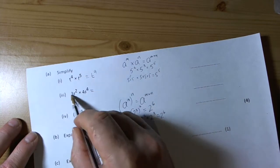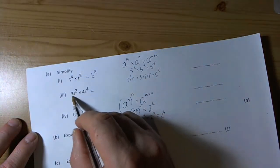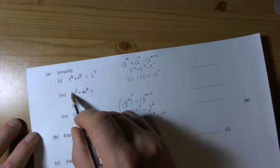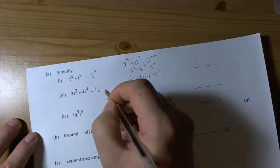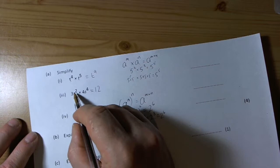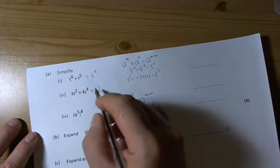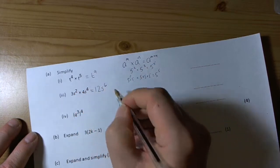Here we've got to be really careful. We're doing times in the two bases, times in the two numbers here, two coefficients. So 3 times 4 is 12. But here we've got s squared times s to the power of 4, so we add those two powers to get s to the power of 6.